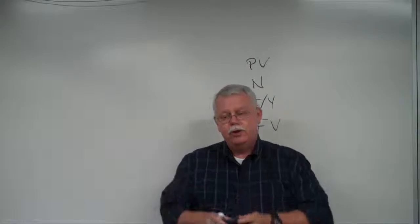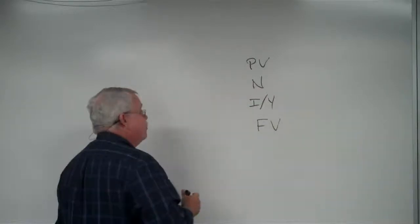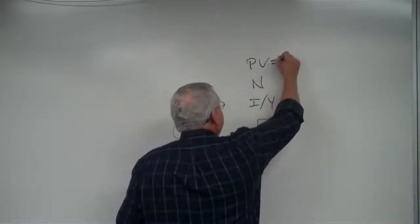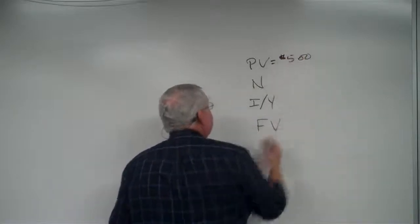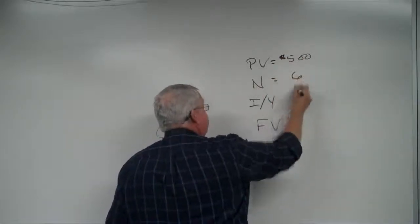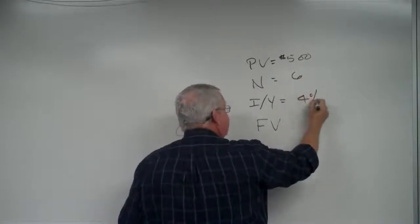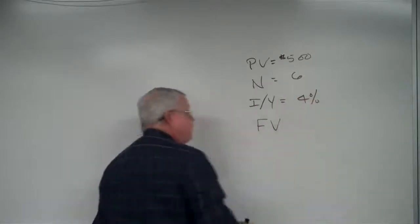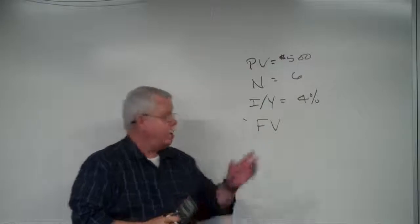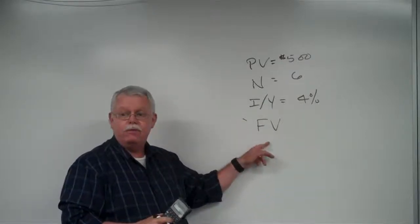After lump sum, we'll talk about regular payments — what if you put $100 a month into an account for seven years? Then you have a stream of payments; we call those annuities. But first, lump sum, simple numbers. If you had $500 today and put it in the bank for six years at an interest rate of 4%, how much will you have in the future? The apostrophe means calculate the future value.